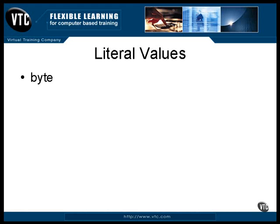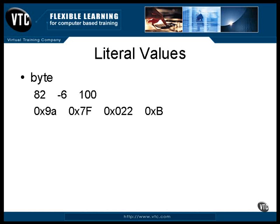A byte is a signed integer. You can assign a value to it as a simple base 10 number, like one of these. In Java, you can declare a hexadecimal value by beginning a number with a zero and the letter x. All of these are valid hexadecimal numbers and will fit into an 8-bit byte. Now, if you want to set the first bit of a hexadecimal byte value, which will make it a negative number, you'll need to cast it like this.